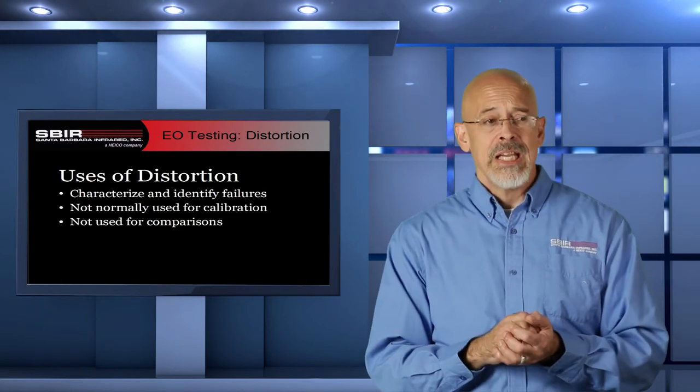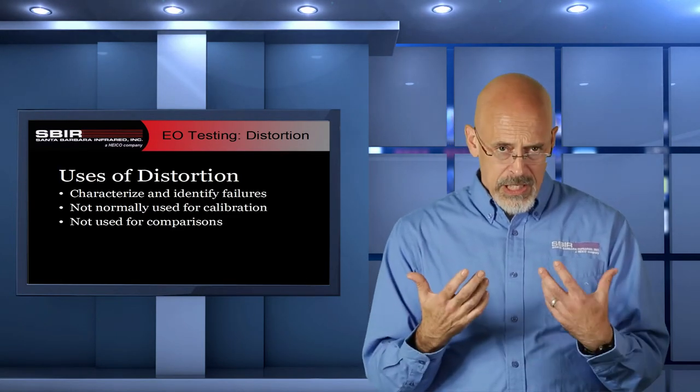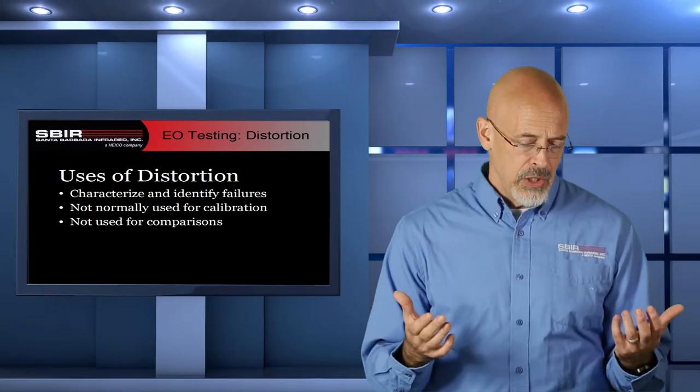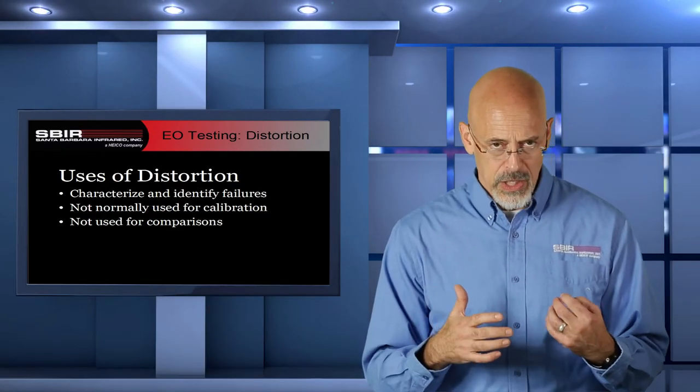So how do we use this? We typically use this to characterize a camera and determine if there are any failures. It's not normally used for calibration, though it can be. You can take that data and do post-processing to correct an image, but it's not typically used for that. And it's rarely used when comparing one camera to another in another model run.